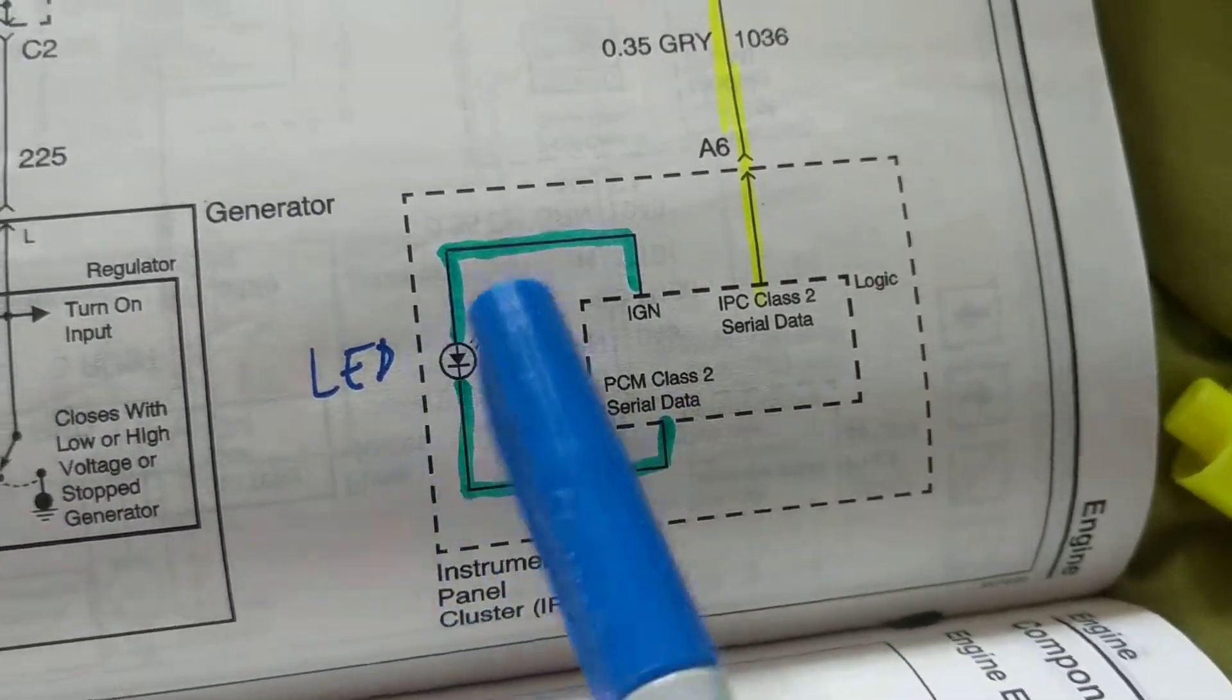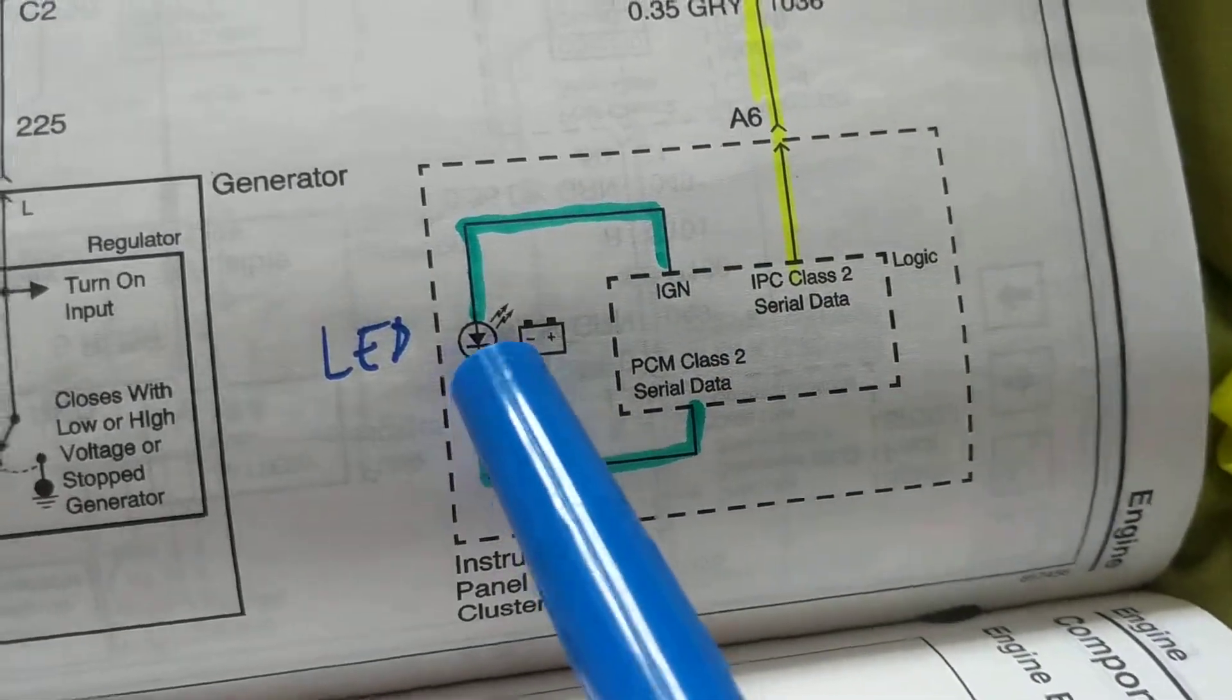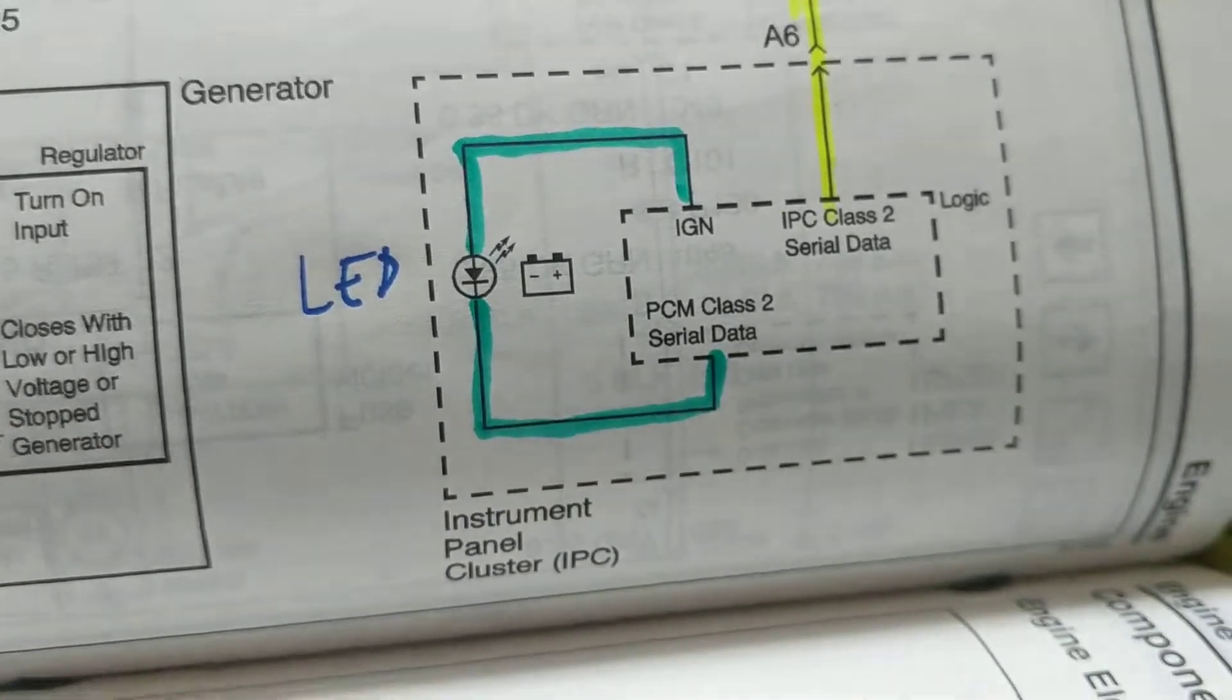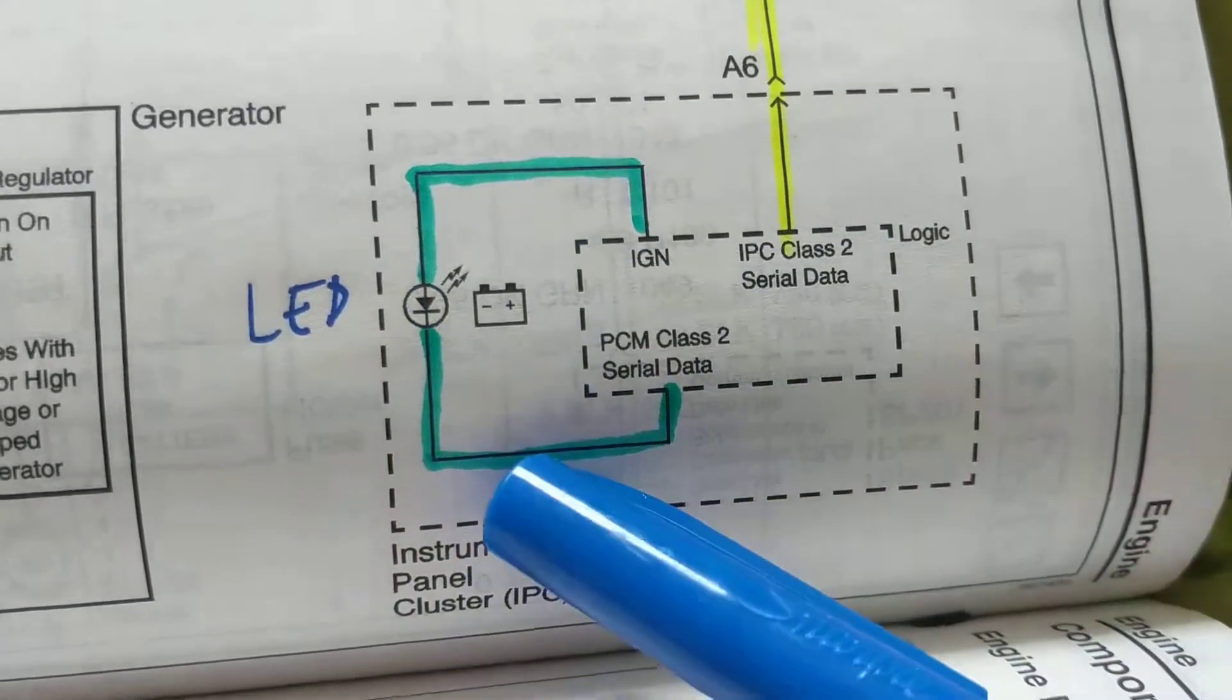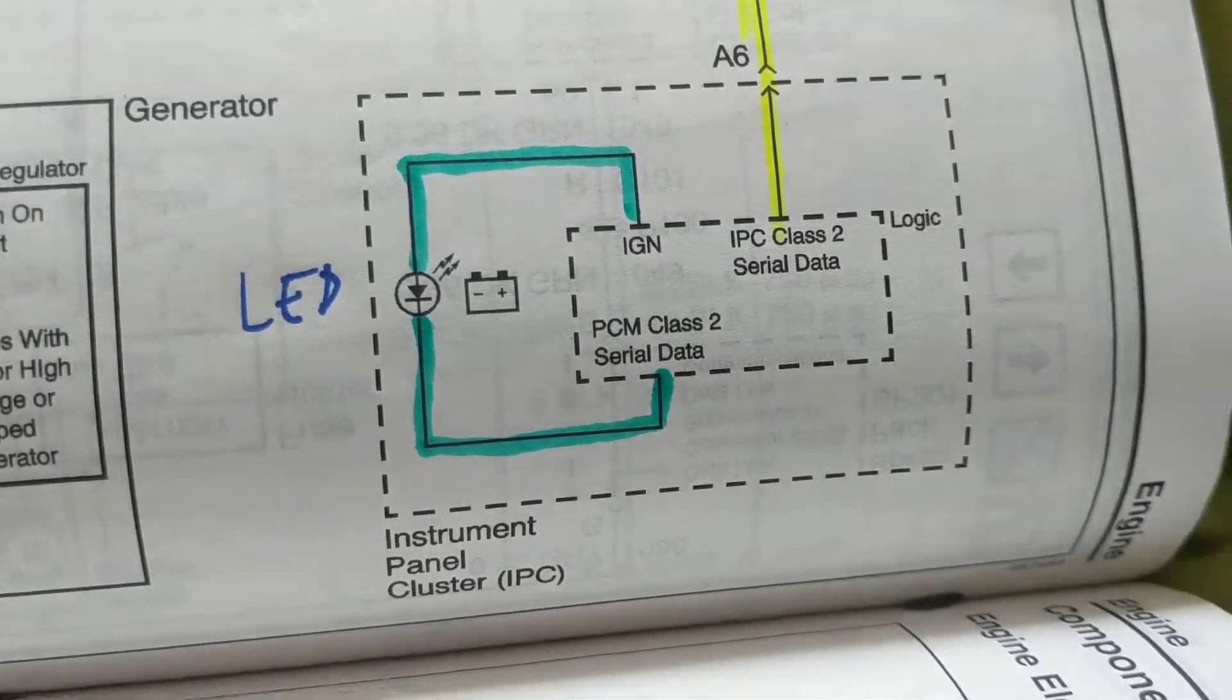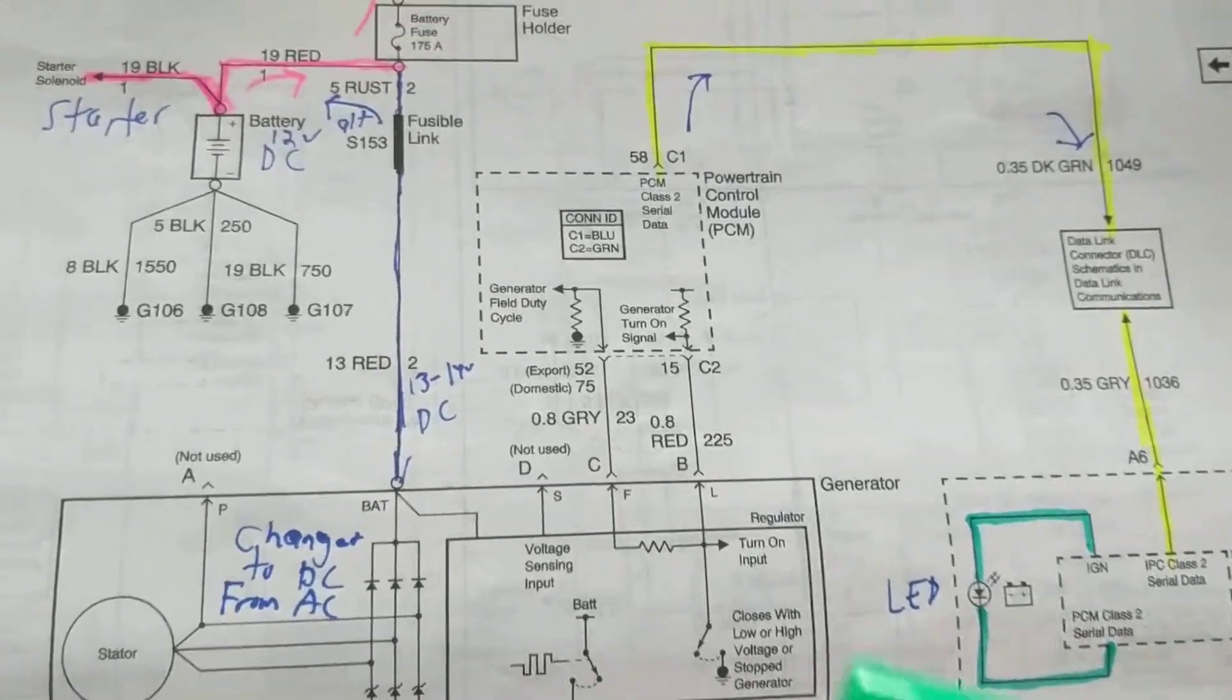When you turn on your ignition key, you see the warning light come on. This is located in the instrument panel cluster by the dashboard. This is the symbol for battery and the LED light. It gives you that warning because the generator is not supplying anything yet. Once you get the generator going, the AC generator or alternator, the light comes out.